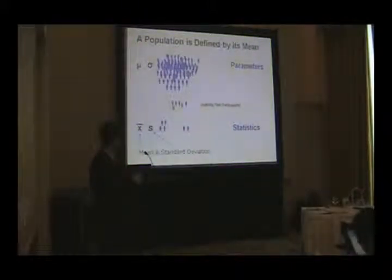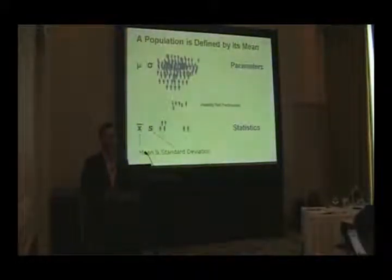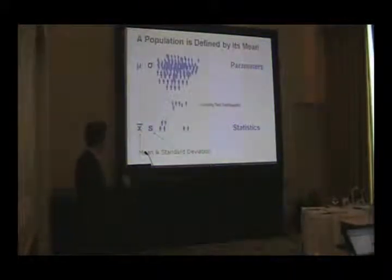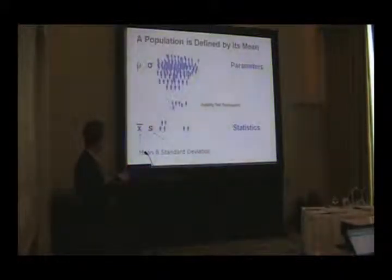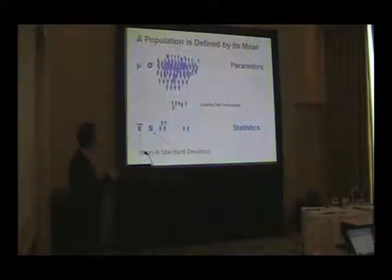Parameters use Greek symbols — this one is for the mean, this one is for the standard deviation. But we rarely have access to everybody in the population. Instead, we take a sample, some subset. These sample values — statistics — estimate the unknown parameters. So we use the sample mean (X-bar) and the sample standard deviation, how variable it is, to estimate those unknown population parameters.